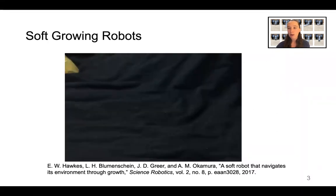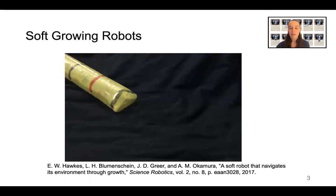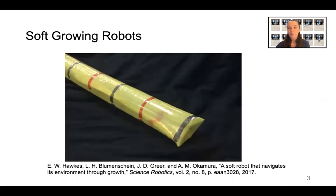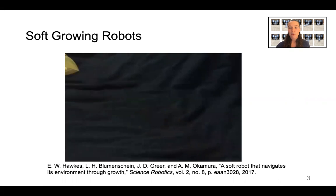Soft-growing robots move by extending from the tip. They achieve this using internal fluid pressure to pull material through their body and turn it inside out at the tip.